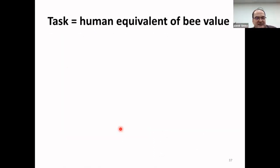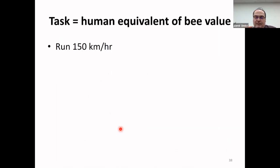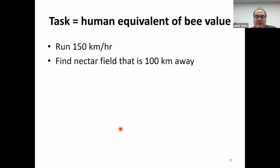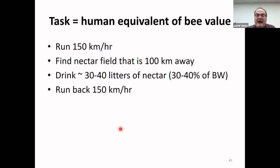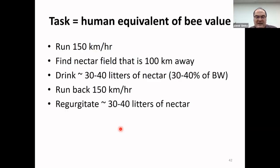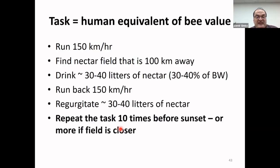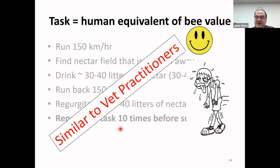To put bee foraging in human terms: if you were 100 kilos, you would run 180 kilometers per hour to find a town 100 kilometers away, locate a specific nectar field, drink 30 to 40 liters of nectar, and run 100 kilometers back carrying that load. Then you would regurgitate the nectar and do it 10 more times before sunset. That speaks about exhaustion — similar to veterinary practitioners, I guess.